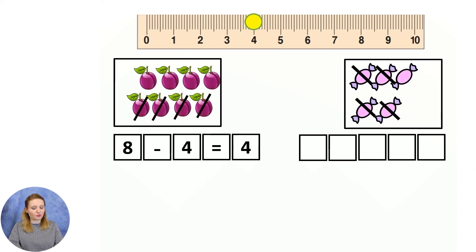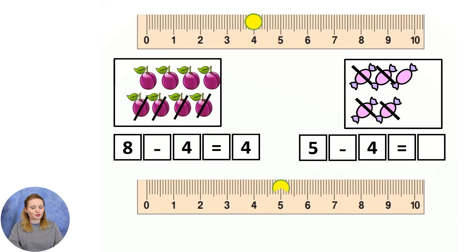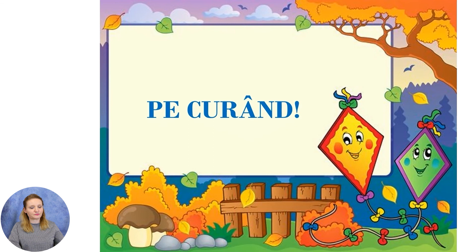Dacă din cele 5 bomboane care erau pe masă, 4 au fost mâncate, câte au rămas? 5 minus 4 este egal cu... Voi verifica utilizând rigla. 5 minus 4 este egal cu 1. Astăzi ați fost isteți și descurcăreți, dragii mei. Am învățat operația de scădere și cum se numesc numerele la scădere. Am învățat să creăm exercițiile de scădere și să le rezolvăm. Vă mulțumesc pentru atenție și pentru participare activă. Vă doresc o zi frumoasă în continuare. Pe curând, dragi copii!